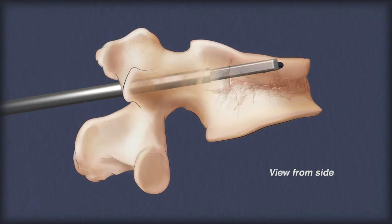First, a wire coil is placed into the vertebral body as a guide. The implant is then inserted over the wire. The wire is removed and bone cement is injected.